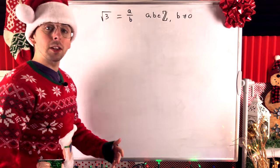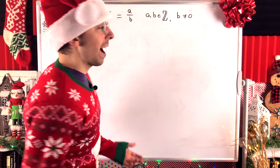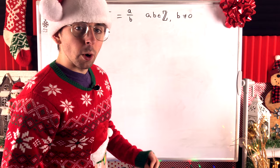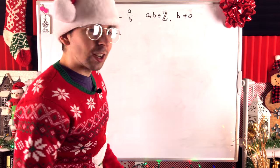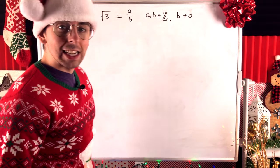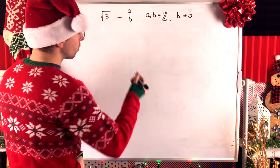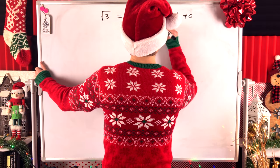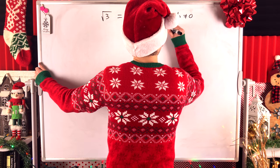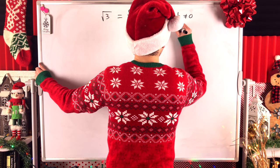And B is non-zero. We can't have zero in the denominator. So, we assume that the square root of 3 is rational. We can write it like this. Furthermore, if it can be written as a fraction, let's take it as a fraction in lowest terms. So, we can assume that this is a fully reduced fraction.